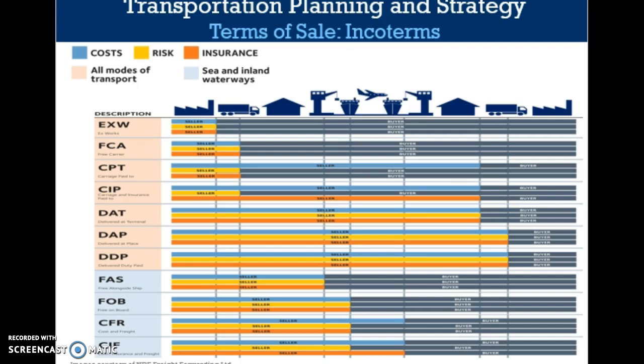In other words, Incoterms don't spell out who owns the product — that is what the contract does. However, they do spell out when risk passes from the seller to the buyer.